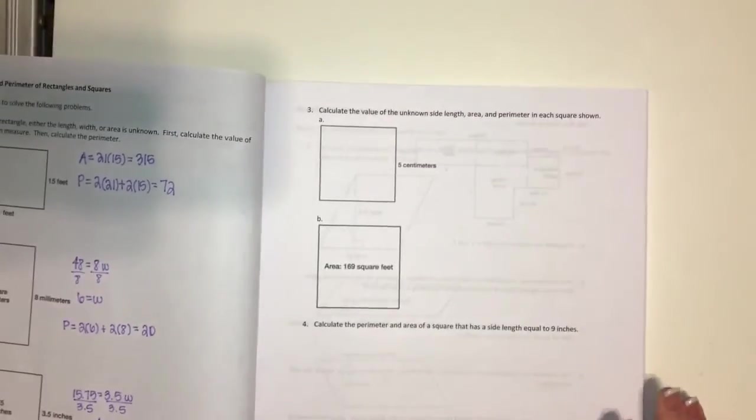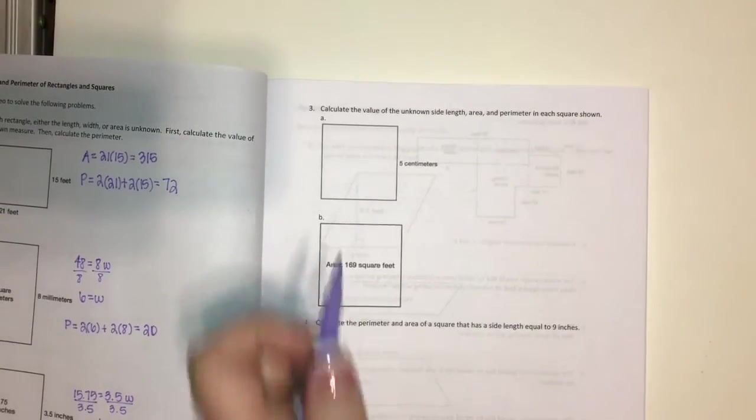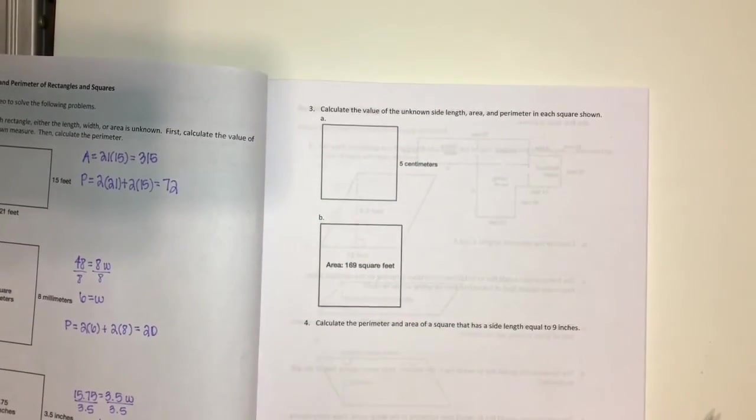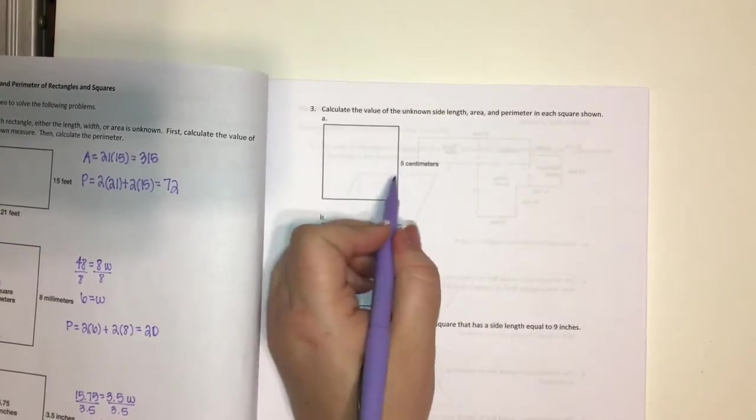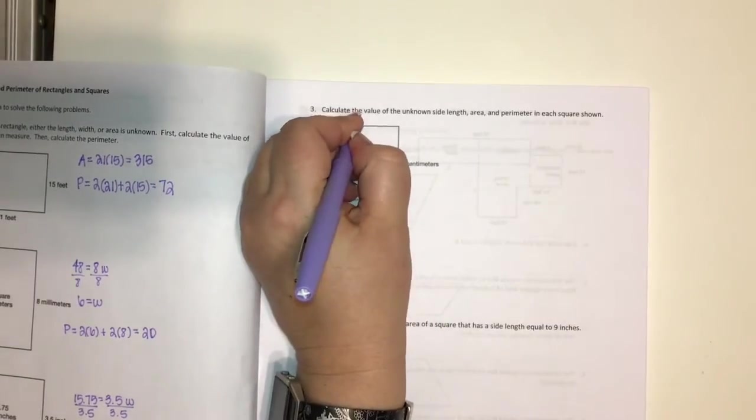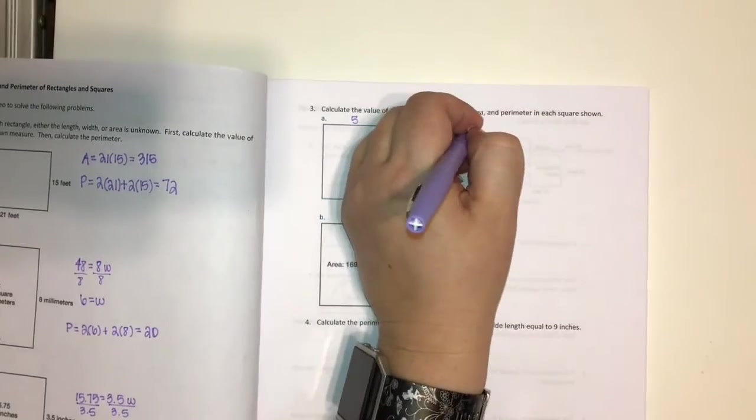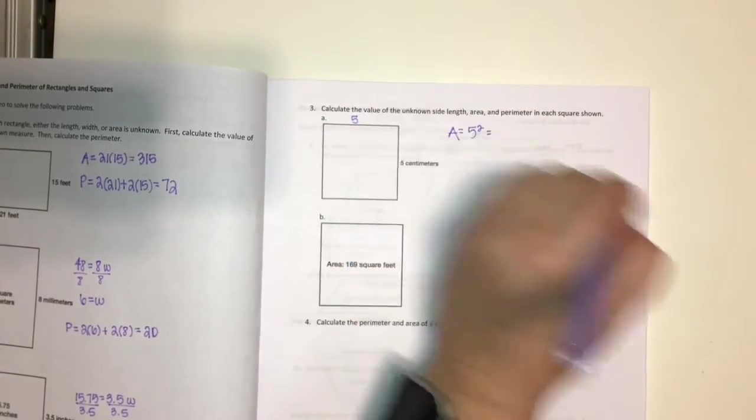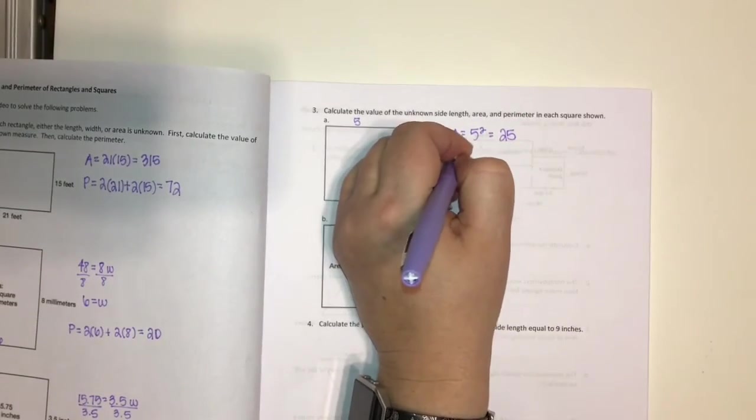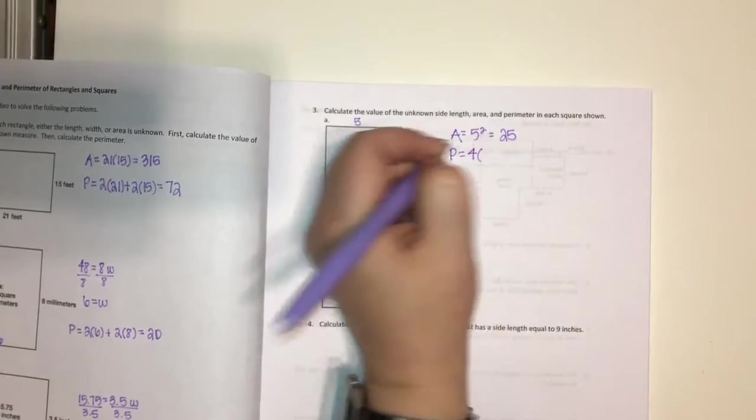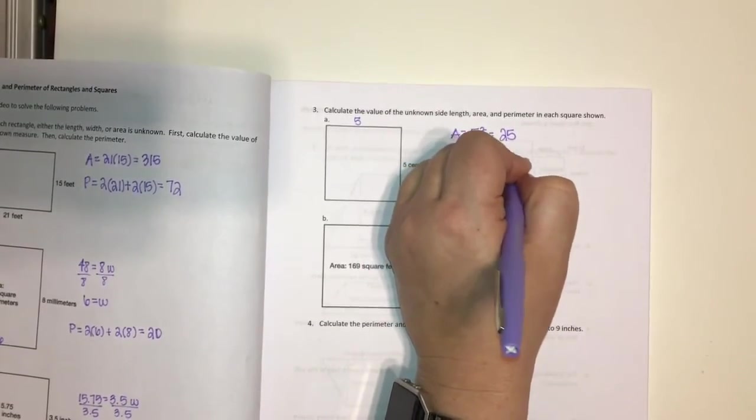Now on to some squares. So here we have, we need to find the unknown value, the side length, the area and the perimeter in each one. So here we know the side length. So since this is a square, if this is 5, this is also going to be 5. And how do we find the area of a square? Well, we just square it, 5 squared, 5 times 5 is 25. And how do we find the perimeter? It's going to be 4 times our side length, which in this case is 5, so that gives me 20.